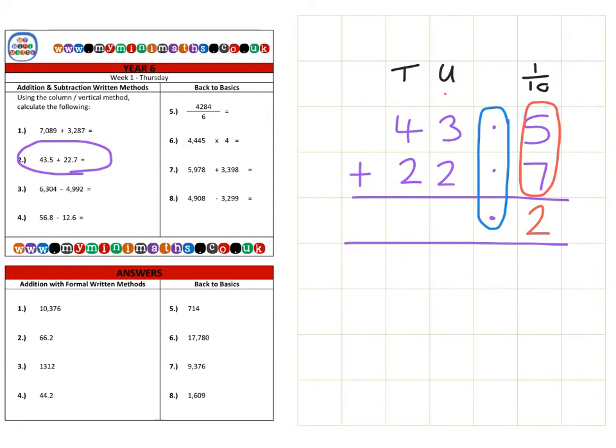Remembering we do have our decimal point here, we've got one unit, three units, and two units, that's six units, and then finally four tens add two tens is six tens, for a final answer of 66.2.